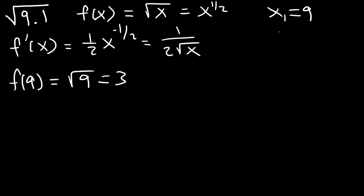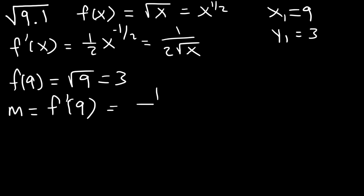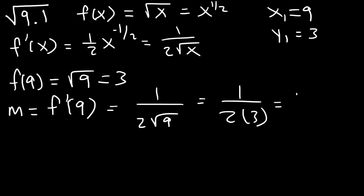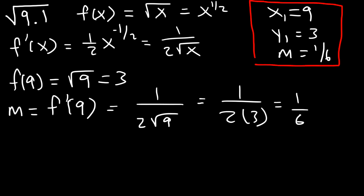So if x1 is 9, then y1 is 3. Now we need to calculate the slope, which is f prime of 9. That's 1 over 2 square root 9. The square root of 9 is 3, and 2 times 3 is 6, so it's 1 over 6. So the slope when x is 9 is 1 over 6. Once you have these three things — x1, y1, and the slope — you can write the tangent line equation.